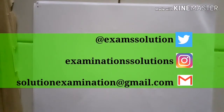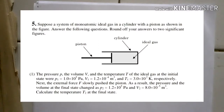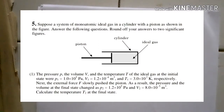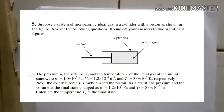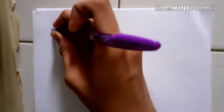Hello everyone, welcome to this Cousins Physics 2016 part 5. There is an ideal gas question — a system of monatomic ideal gas in a cylinder with a piston as shown in the figure. Answer the following questions and round off your answer to two significant figures. Let me draw the piston.